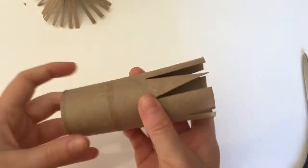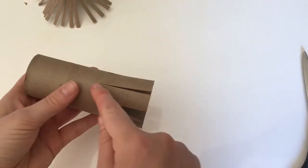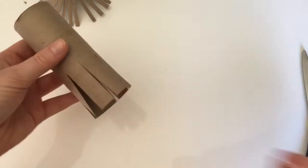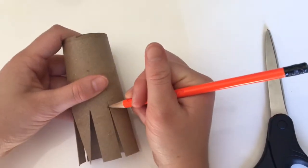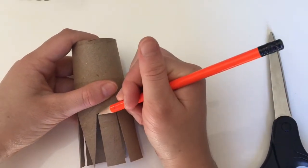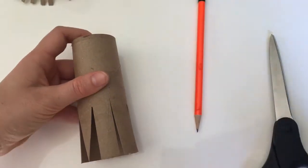And another pattern you can do is pointy petals like this one so you're just going to cut long, fatter strips. And then you can draw your design on the edge and then cut it out.